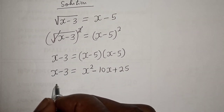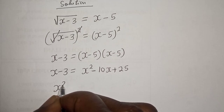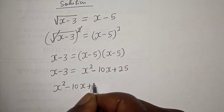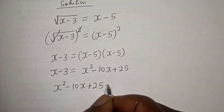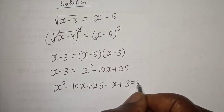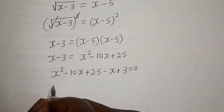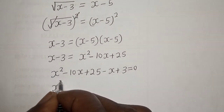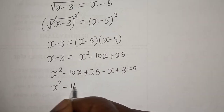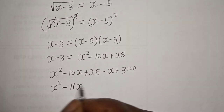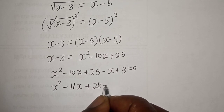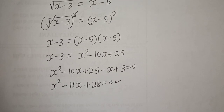Then we can equate everything to zero. We have S squared minus 10S plus 25 minus S plus 3 is equal to zero. This simplifies to S squared minus 11S plus 28 is equal to zero. This is a quadratic equation.